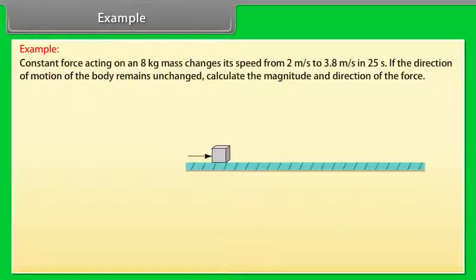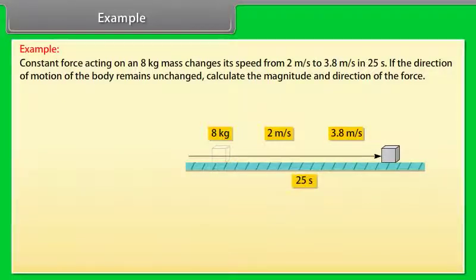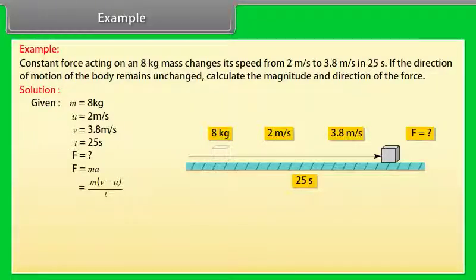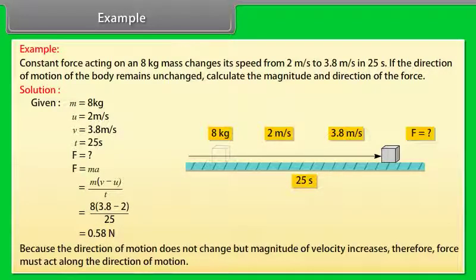Example: A constant force acting on an 8 kg mass changes its speed from 2 m/s to 3.8 m/s in 25 seconds. If the direction of motion remains unchanged, calculate the magnitude and direction of the force. Given: M = 8 kg, U = 2 m/s, V = 3.8 m/s, T = 25 s. F = M(V − U)/T = 8 × (3.8 − 2)/25 = 0.58 N. Because the direction of motion does not change but magnitude of velocity increases, the force acts along the direction of motion.